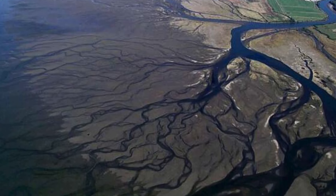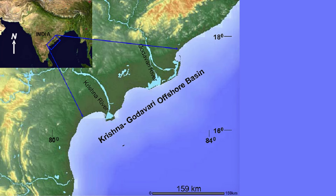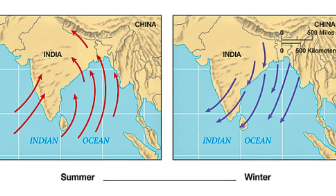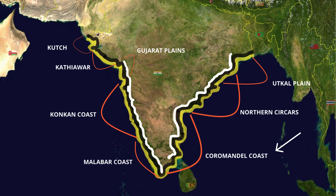The Mahanadi, Godavari, Kaveri and Krishna rivers drain these plains. The region experiences both the northeast and southwest monsoon rains, with an average annual rainfall ranging from 1,000 to 3,000 mm. The east coast of India, particularly its southeastern part, the Coromandal coast, is known for its emergence.